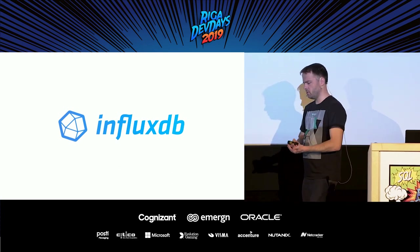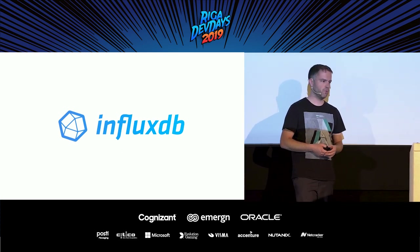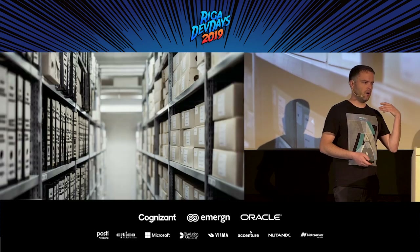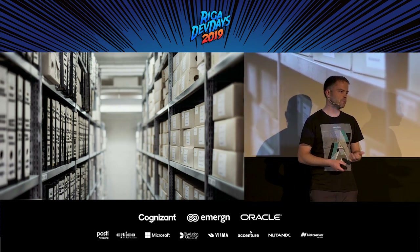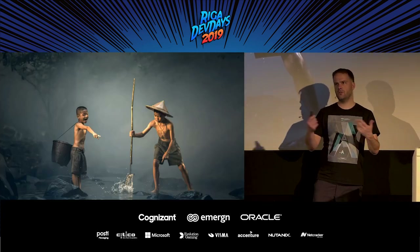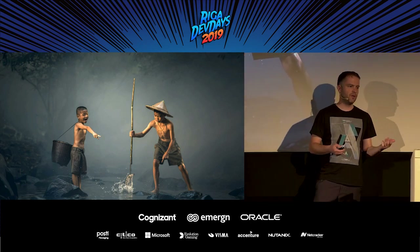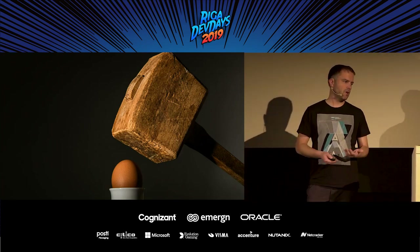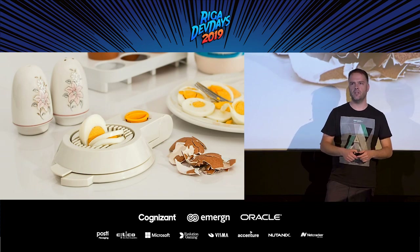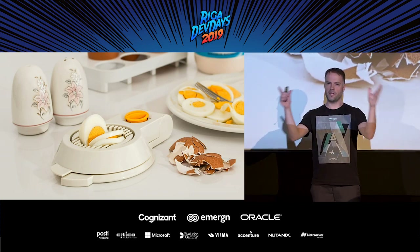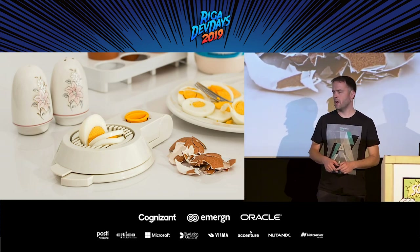So why would you use InfluxDB? InfluxDB is a time series database — there are some alternatives, but when I came across this one, it looked quite nice. I could have used a more traditional way like a SQL Server, Oracle, or MySQL database to store the same data. But for me, it felt a bit old-fashioned — a bit like using a hammer to fix everything. Having a time series database to store time-based data feels like a nice fit, instead of a big database that can do 100,000 things when I just need one of those things.